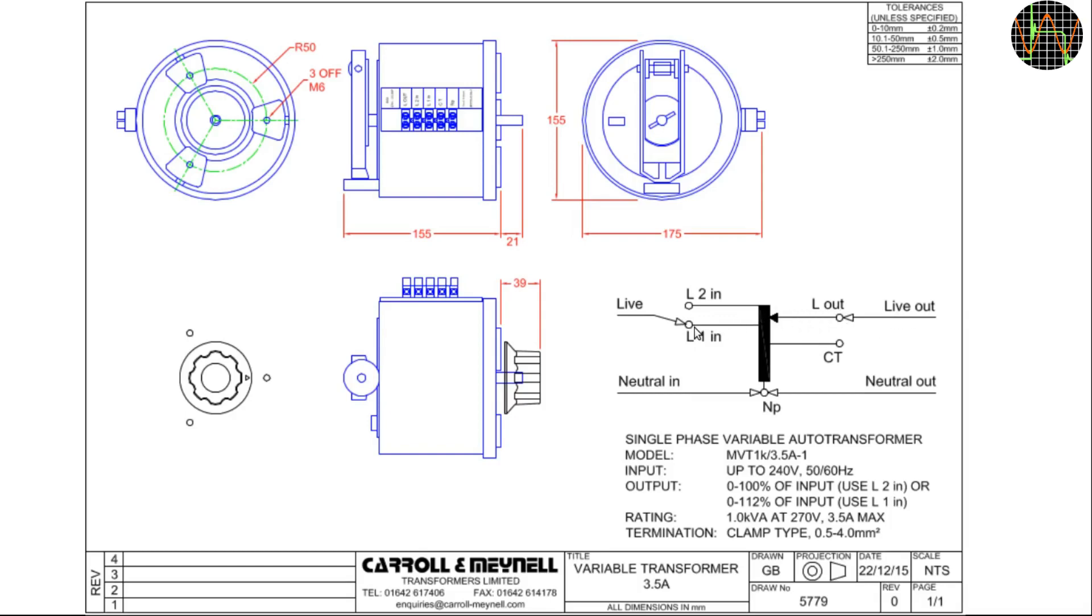Instead, I choose the second option to connect the input live wire to L1. This means the coil portion above L1 now provides additional 12% of extra voltage. At 240V input when the slider touches L1, you get 240V, but turning further up to L2 you get almost 270V as output. Nice!